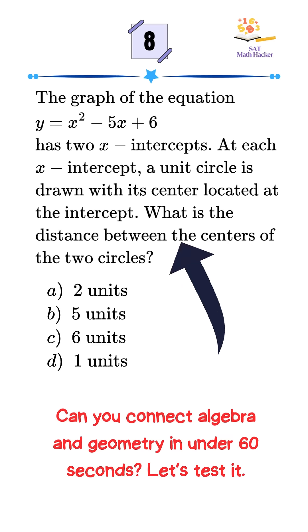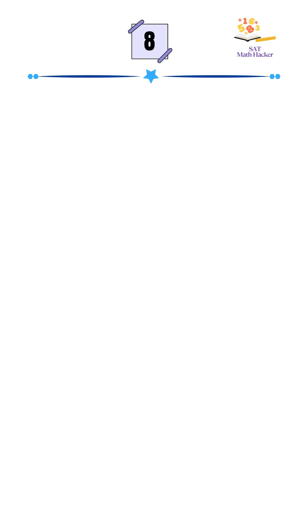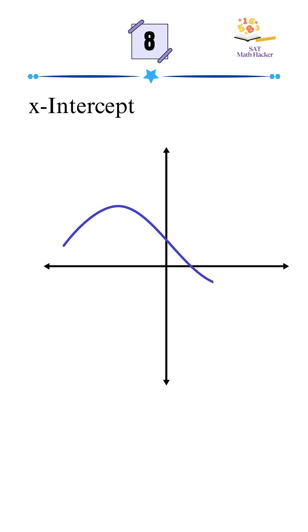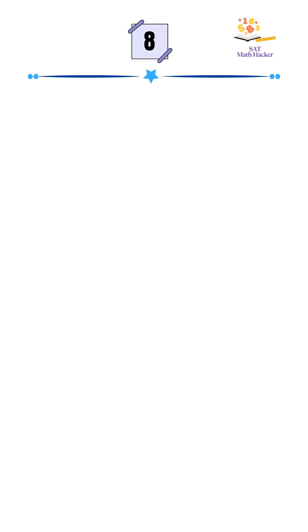Let's solve it. An x-intercept is the point where the graph crosses the x-axis, meaning y is equal to 0. So we set the equation equal to 0.